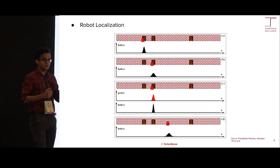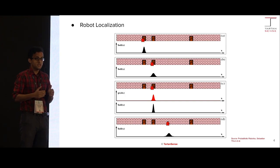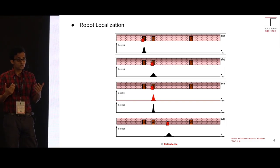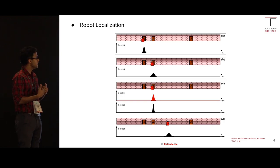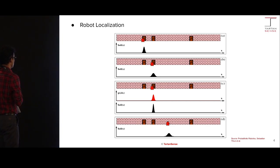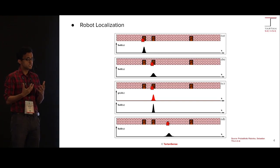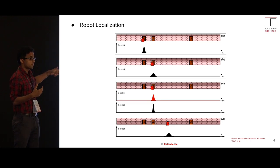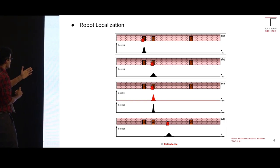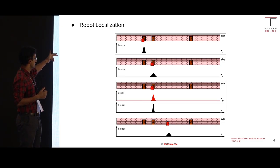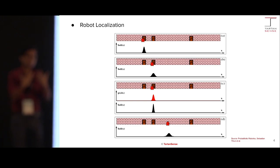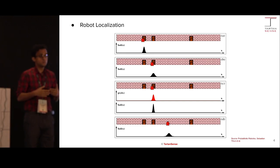The robot starts moving again and is in front of door two. As you can see in figure B, the black Gaussian is wide — it's more uncertain of its own state. Why? Because all motions have some uncertainty: motor bias, wheel slippage. In figure C, the camera gives a measurement that the robot is in front of door two, shown with the red Gaussian. We fuse the red Gaussian (measurement) with the black Gaussian in figure B (prediction) to get a much better estimate shown as the black Gaussian in figure C — much narrower, meaning we are more certain of the robot's state.